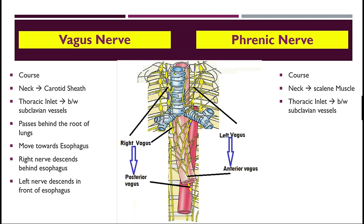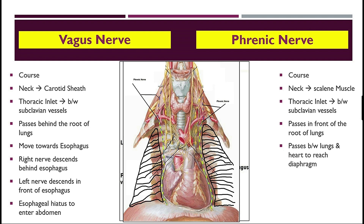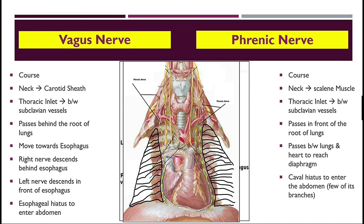The vagus nerve lies relatively medially and the phrenic nerve relatively laterally between the two subclavian vessels. After entering the thorax, the vagus nerves lie on either side of the trachea, pass behind the root of the lungs, and then both move toward the esophagus. The right vagus descends behind the esophagus and is named the posterior vagal nerve; the left vagus descends in front of the esophagus and is named the anterior vagal nerve. Both enter the abdomen through the esophageal hiatus. The phrenic nerve descends in front of the root of the lungs — the right nerve passes between the right margin of the heart and right lung, the left between the left margin of the heart and left lung — reaching the diaphragm, with branches entering the abdomen via the caval hiatus.